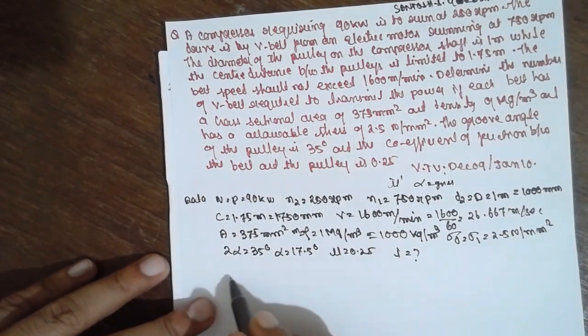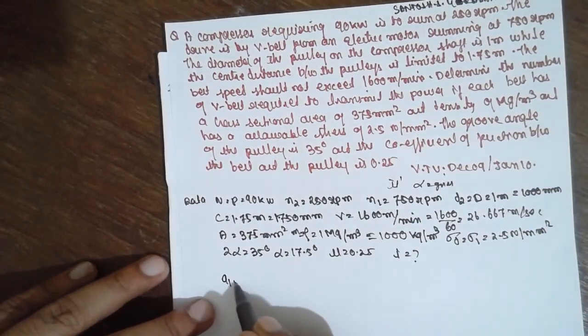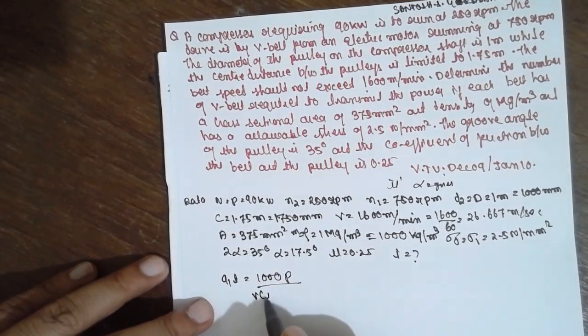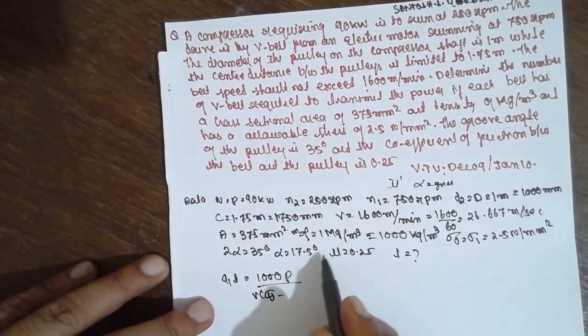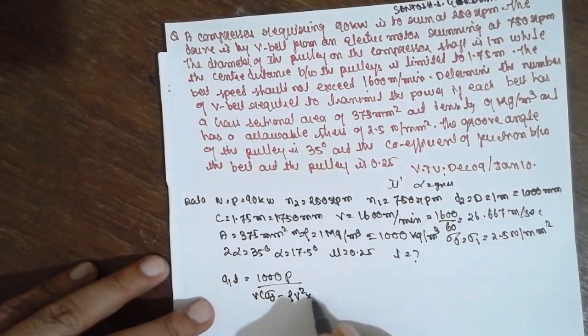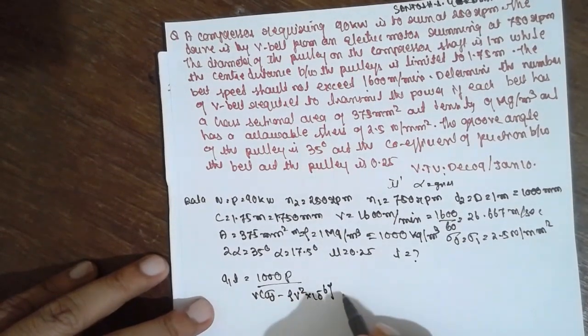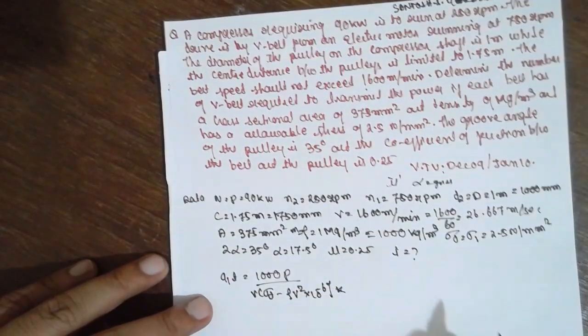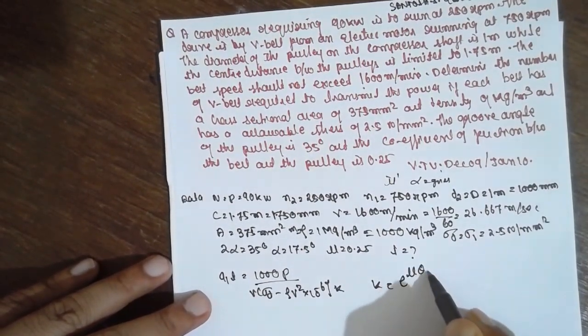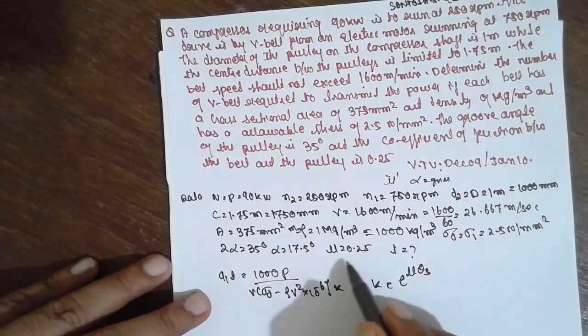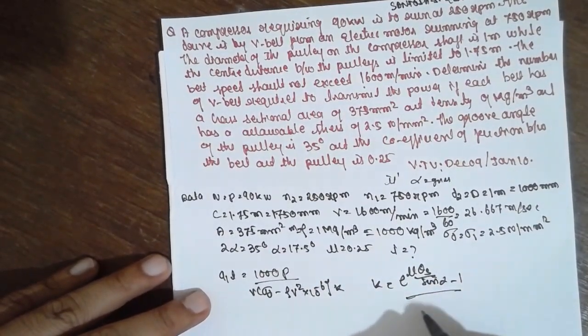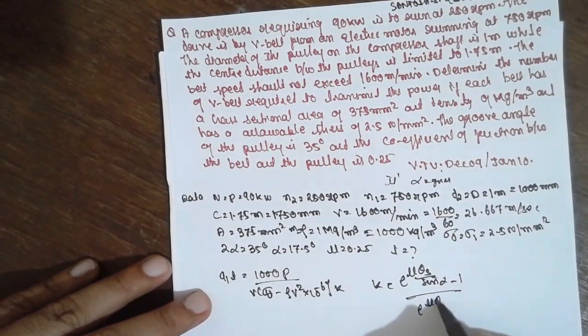The formula will be: T1 is equal to 1000P divided by v times sigma d minus (instead of writing w by g, direct like dm or rho v square into 10 raised to minus 6) into k. What is k here? K is e raised to mu theta s divided by sin alpha minus 1 divided by e raised to mu theta s divided by sin alpha, if mu is given.